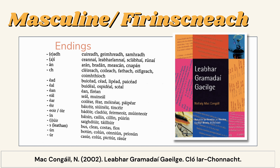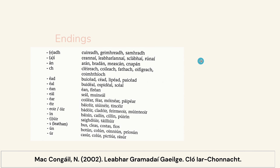I'll show you one interesting thing about Irish: cailín is the word for girl, and cailín in Irish is actually masculine. So cailín — the word for girl — is masculine. It ends in -ín. Words that end in -ín in Irish are masculine.